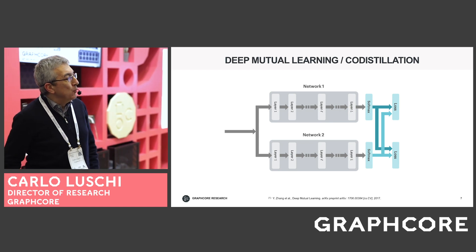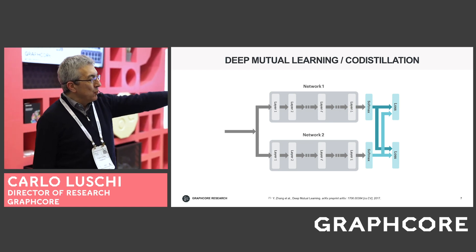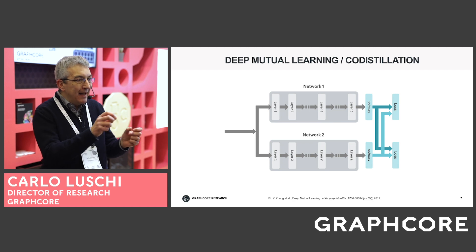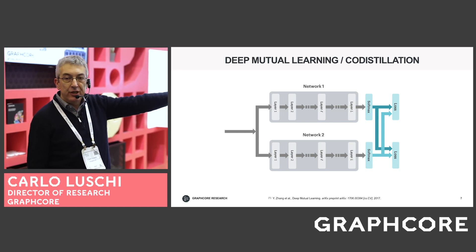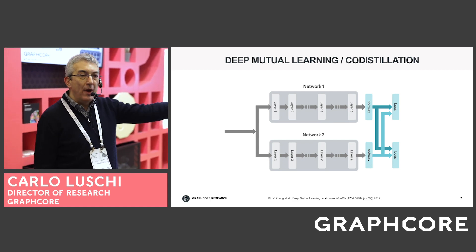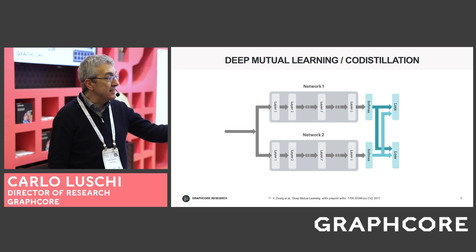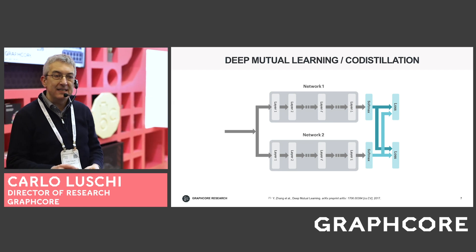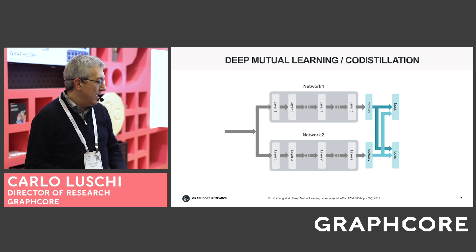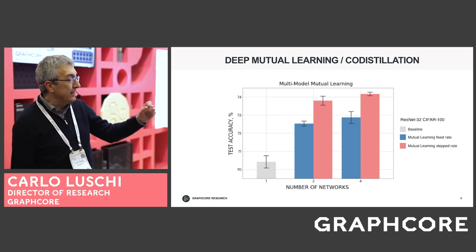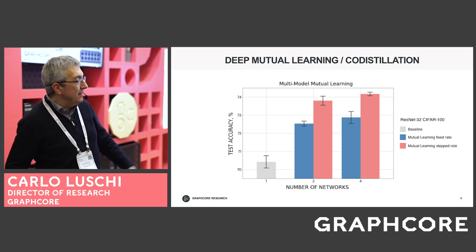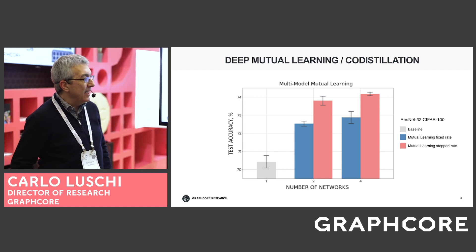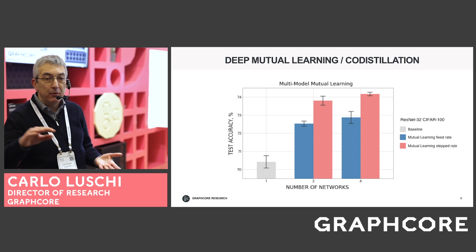Going into more detail on deep mutual learning and co-distillation: using two networks as an example, the concept is that instead of having a single large model, we train multiple parallel models. These are trained completely independently — not exchanging weights, parameters, or gradients as in conventional data parallelism — except that each model has a loss component that penalizes the KL divergence between the predictions of different models. This has been shown to provide a significant performance advantage. We are addressing further improvement with a schedule of the co-distillation rate that varies during training, compared to the conventional fixed co-distillation baseline.